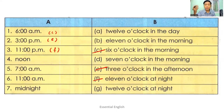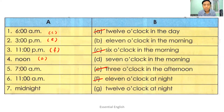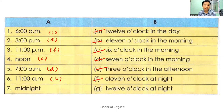Number five: seven A.M. means seven o'clock in the morning — match with D. Number six: eleven A.M. refers to eleven o'clock in the morning. Number seven: midnight means twelve o'clock at night — match with G.